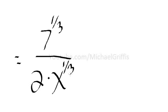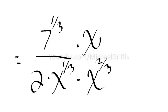I'm going to go ahead and just rewrite. So we have seven to the one-third over two X to the one-third. Now we've got to get this radical out of the denominator. So do this: multiply the bottom by X raised to the two-thirds. Times what you do in the bottom, you got to do in the top.